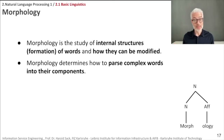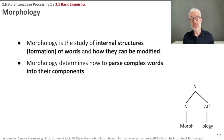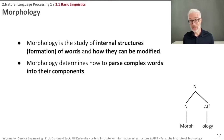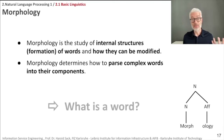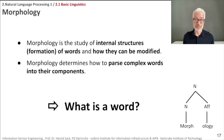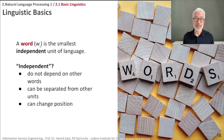We have now identified words, which are created from sounds — and sounds, if they are discriminative and make a difference in the meaning of a word, are called phonemes. But what is a word? A word is usually the smallest independent unit of a language.